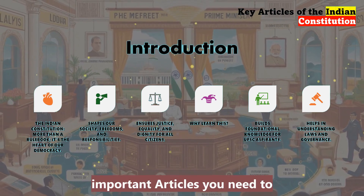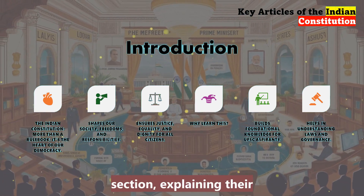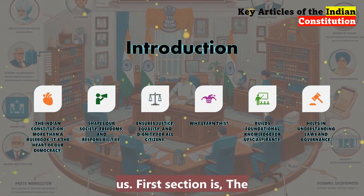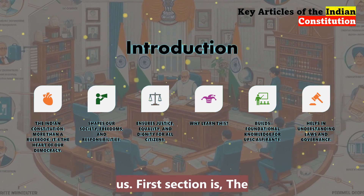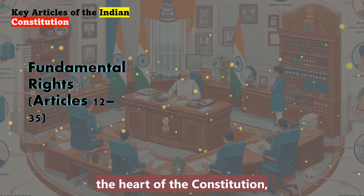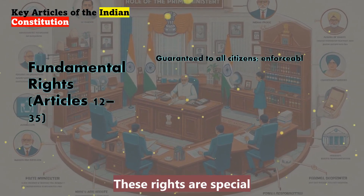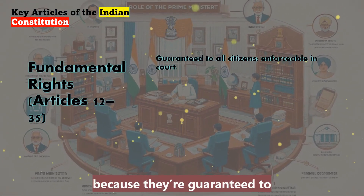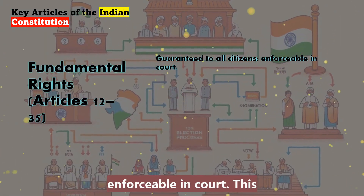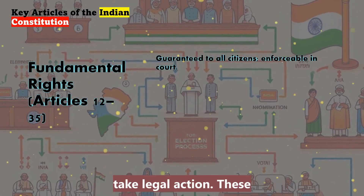Let's break down the most important articles you need to know. We'll go section by section, explaining their significance and why they matter to each and every one of us. The first section is the Fundamental Rights, from Articles 12 to 35. Starting with the heart of the Constitution, we have the fundamental rights. These rights are special because they're guaranteed to every citizen and they're enforceable in court.